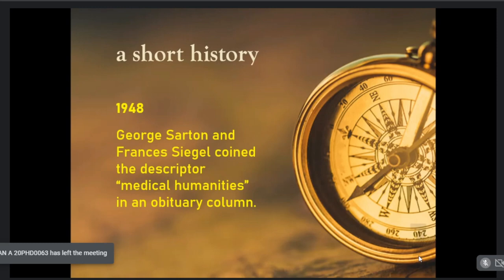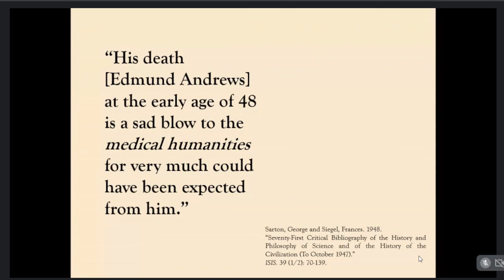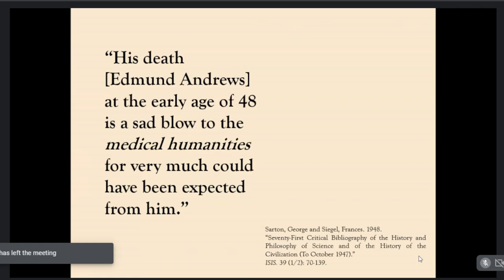It all started in 1948. Two writers, George Sarton and Francis Segal, coined the descriptor 'medical humanities.' Interestingly, the term appeared in an obituary column in a journal called Isis — a journal devoted to the study of science, medicine, and civilization. The quote reads: 'His death, referring to Edmund Andrews, at the early age of 48, is a sad blow to the medical humanities for very much could have been expected from him.' This is the first time we encounter the words 'medical humanities.'